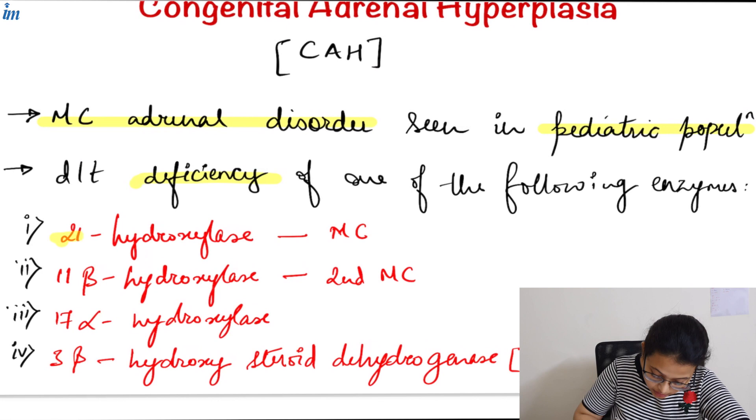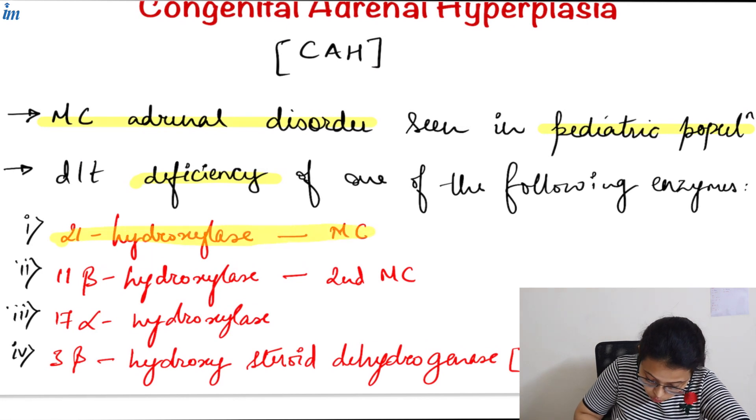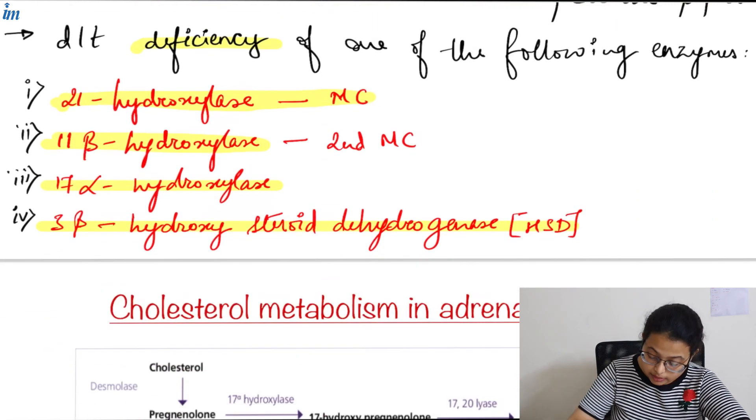These enzymes are 21-hydroxylase—the most common enzyme deficiency seen in CAH—followed by 11-beta-hydroxylase, followed by 17-alpha-hydroxylase, and the last one is 3-beta-hydroxysteroid dehydrogenase.